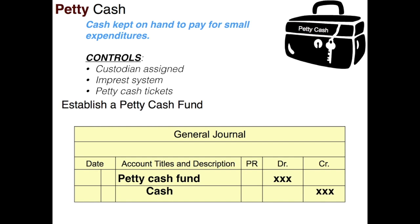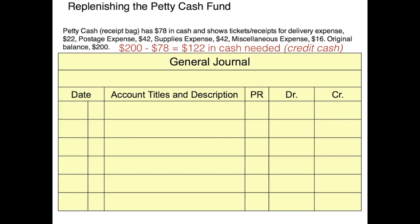The easiest way to journalize a transaction based on these expenses is: I started with $200 and only have $78 left, so I need to put back $122 into the bag. No matter what the receipts add up to, I've got to get $122 back in that bag — because it's an impressed system and it has to stay at $200 at all times. So that $122 is going to come out of my cash account; I'm going to credit cash for $122.